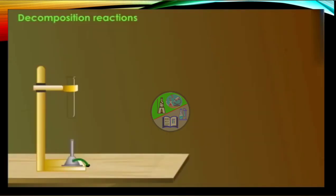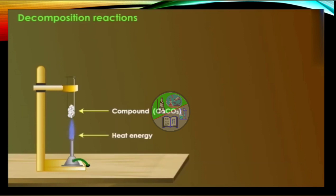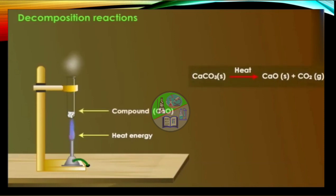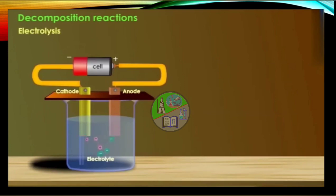A single substance or compound breaks up to form two simpler substances in a decomposition reaction. Decomposition reaction generally takes place when energy in some form — such as heat, electricity, or light — is supplied to the reactants. Calcium carbonate when heated gives calcium oxide and carbon dioxide gas; decomposition of a substance by heating is called thermal decomposition.